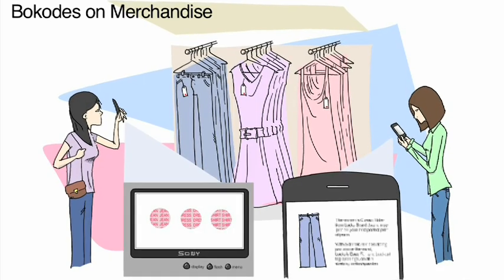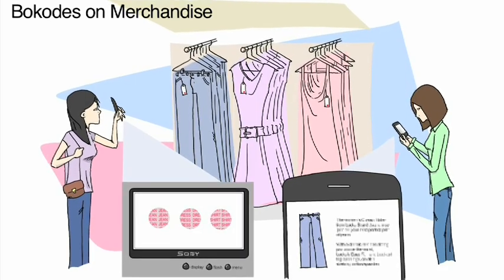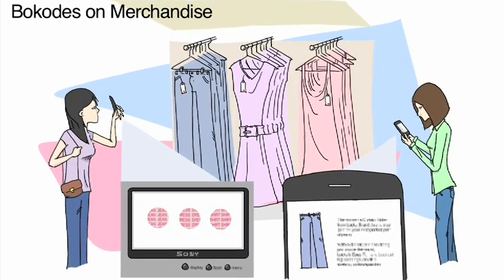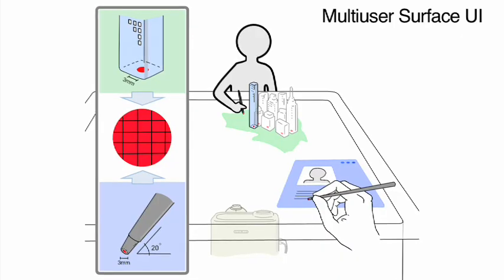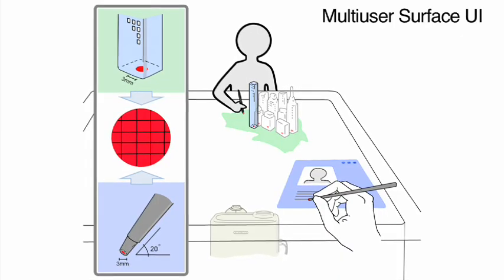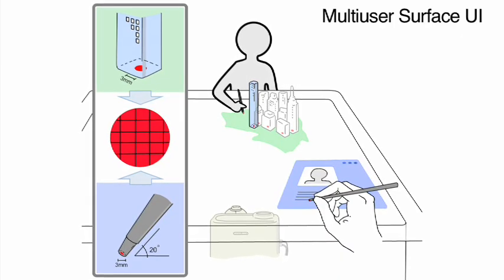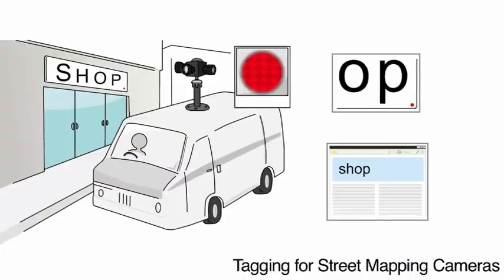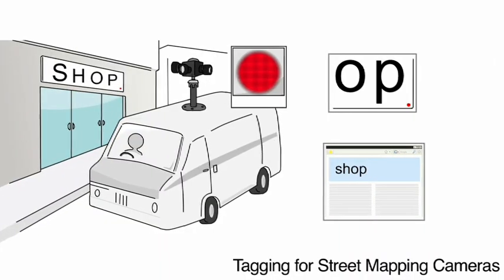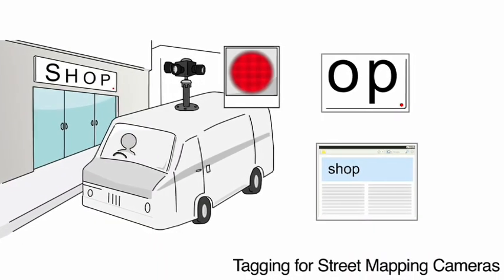We explore the following future scenarios for bocodes: passive tagging on clothes and merchandise, machine-human interaction, and tagging on storefronts and facades.